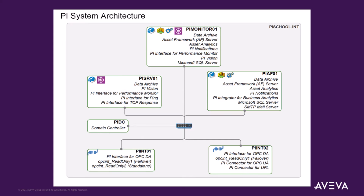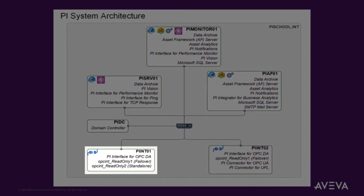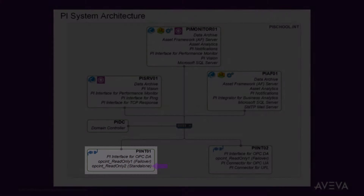Refer to the PI architecture diagram provided in the scenario at the beginning of this course manual to get the machine name of the interface node. For this exercise, you will be focusing on the standalone instance of PI Interface for OPC. In this course, you will only create the elements for the PI IN-01 PI Interface Node machine, and only for the standalone PI OPC interface instance on it.